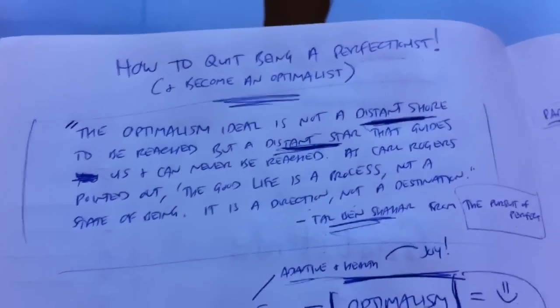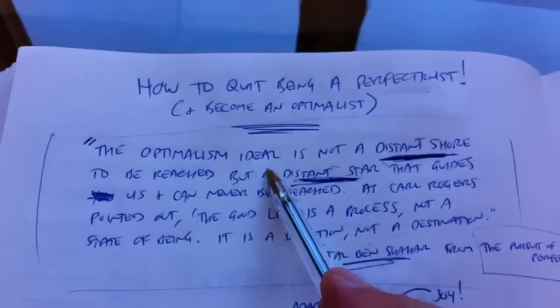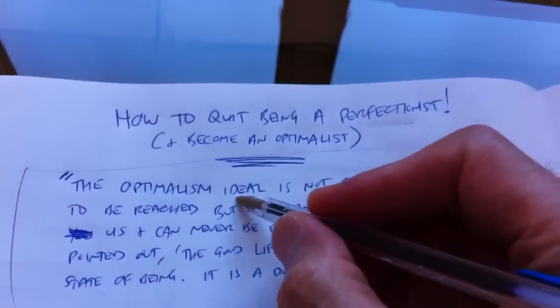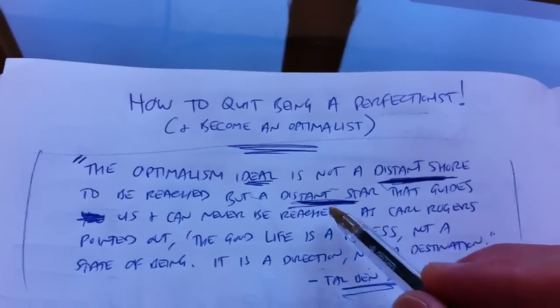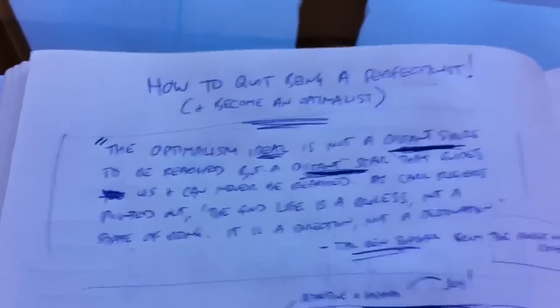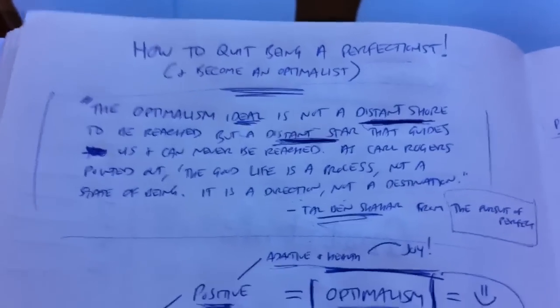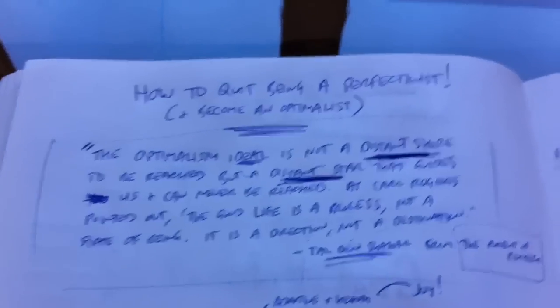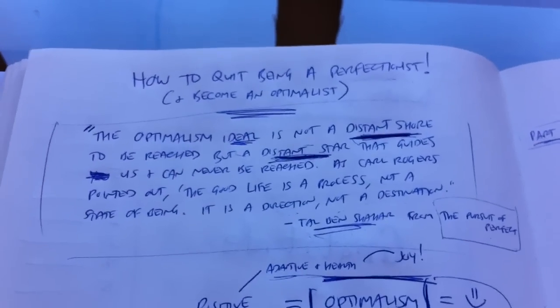Amazing stuff, and I just love the idea that our ideals, we all have ideals. That's a great thing, but we've got to remember they're more like distant stars than distant shores. We're never going to get there. John Wooden tells us, go for perfection, but know you're never going to get it.